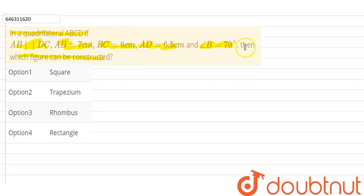Let's see which figure can be constructed. First of all, the condition given here is that one pair is parallel. This is given here: AB is parallel to DC.